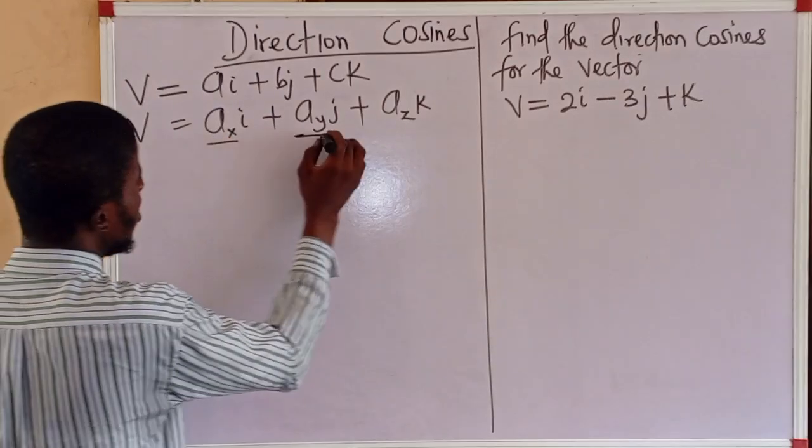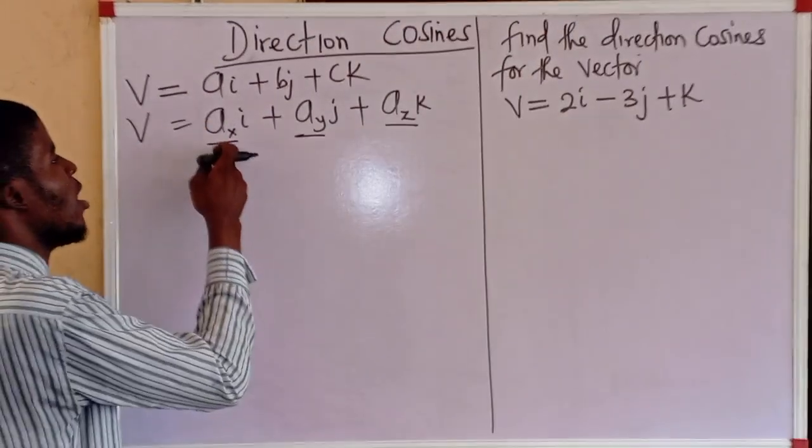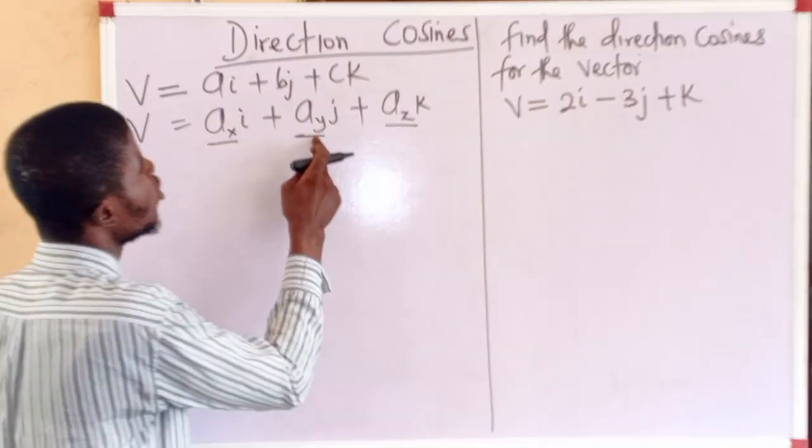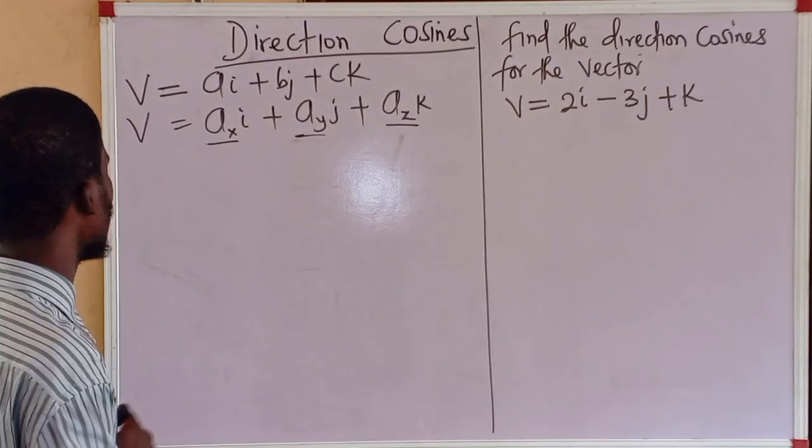Now, this ax, ay, az - we have the component of the vector along the x axis, along the y axis, and along the z axis. The direction cosines are these.